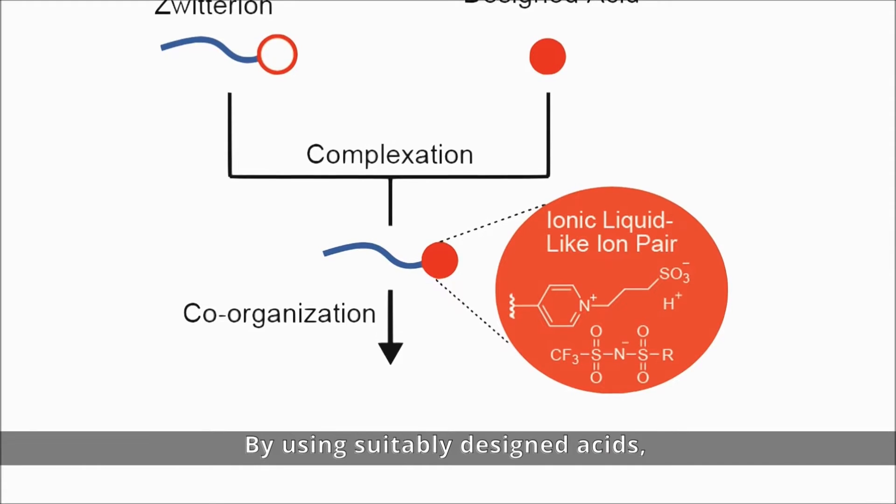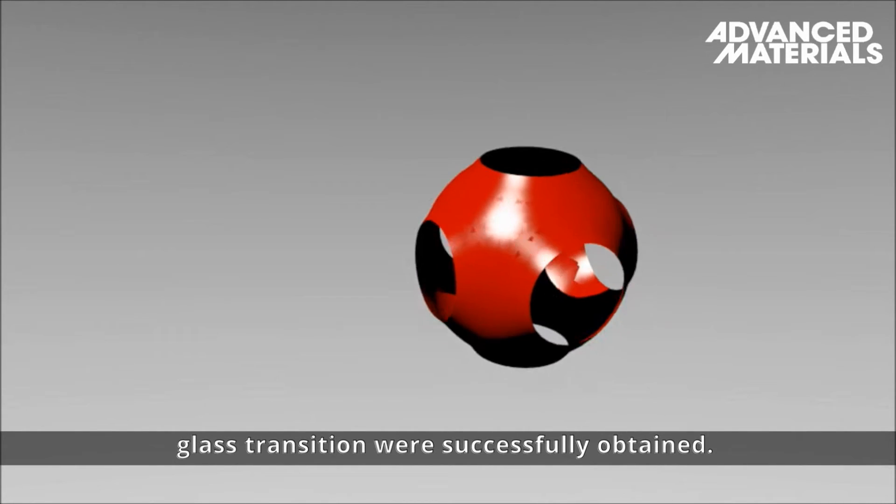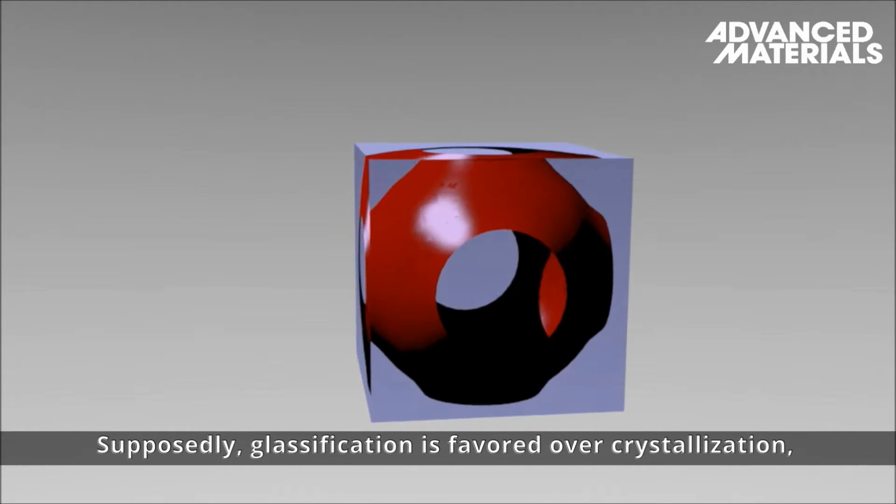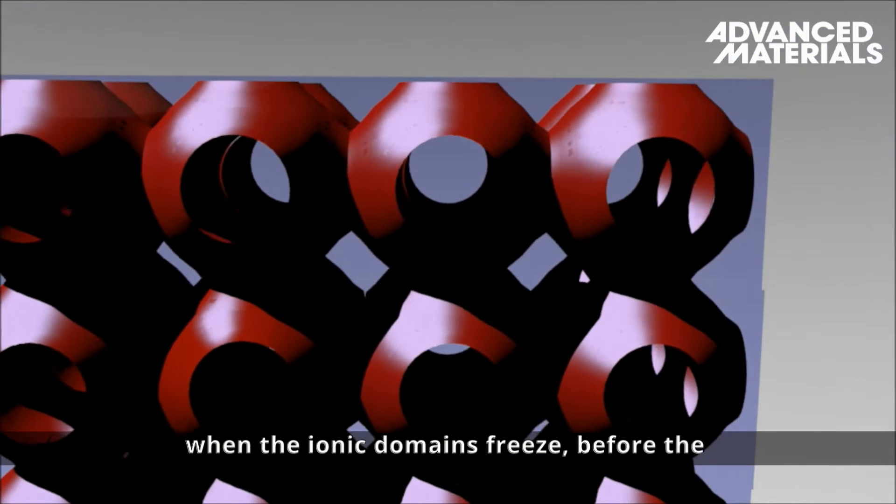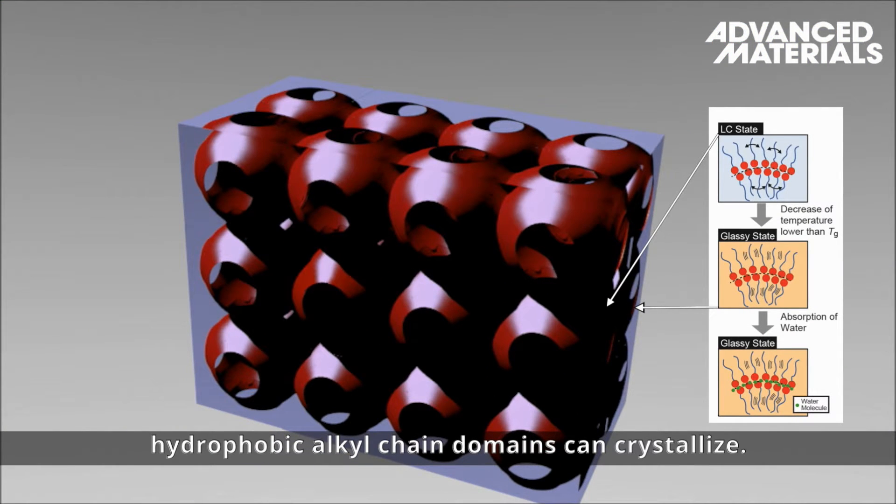By using suitably designed acids, bicontinuous cubic liquid crystals showing glass transition were successfully obtained. Supposedly, glassification is favored over crystallization when the ionic domains freeze before the hydrophobic alkyl chain domains can crystallize.